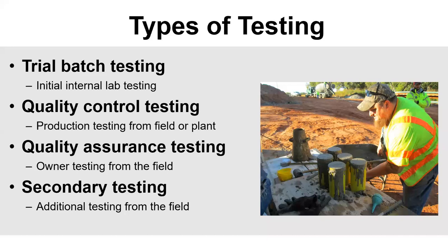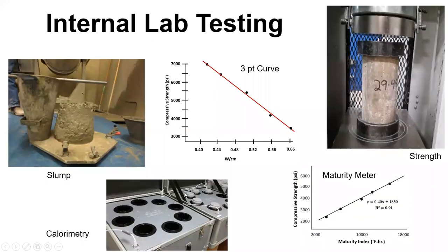The state DOT inspector won't test nearly as much as the third-party quality control company — they're mainly doing spot checking. Every DOT runs a little differently, but that's generally how many of them work. After concrete hardens, you may also have secondary testing — for example, if strength results look poor, you might core cylinders; if there's delamination or surface issues, you do more testing to figure out what's happening.